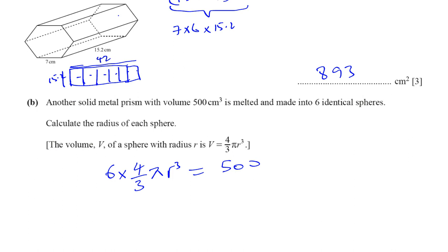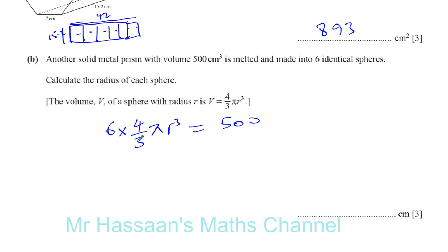If we just simplify this, we've got three and the six cancelling. Give you two. You're left with eight pi r cubed equals 500. So r cubed equals 500 over eight pi. And so that will give us an answer. Pretty simple for six marks, actually.